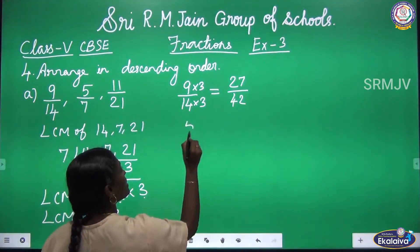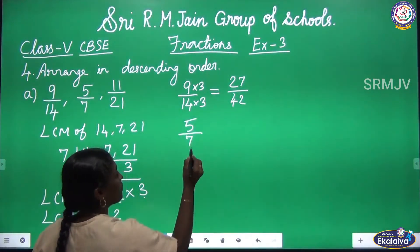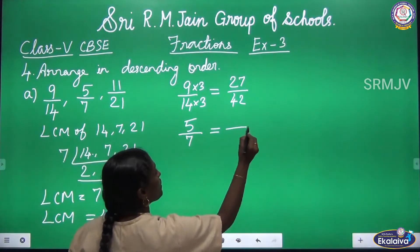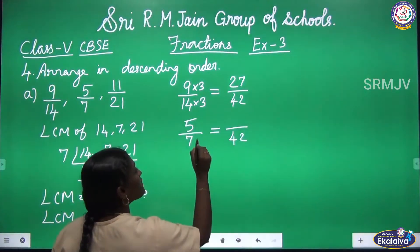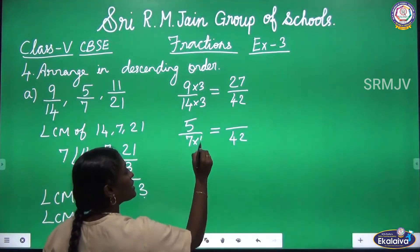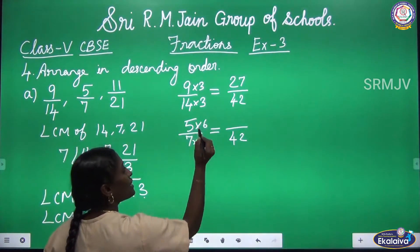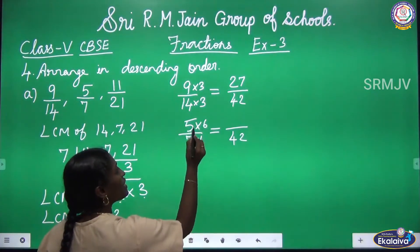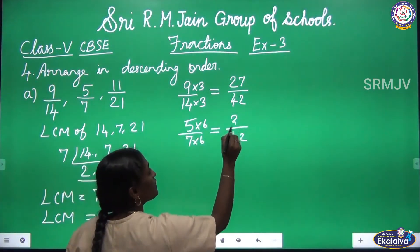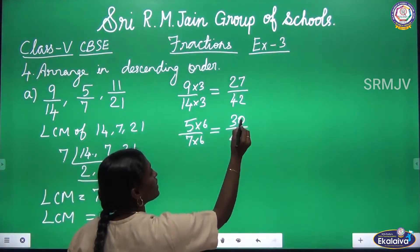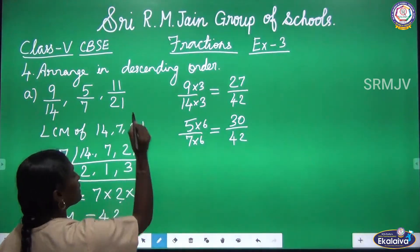The second fraction is 5 by 7. In the 7 table, 7 sixes give 42, so we multiply the numerator by 6. 5 sixes are 30, so the second fraction becomes 30 by 42.